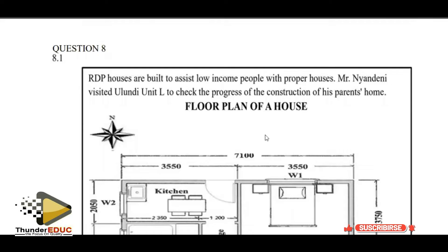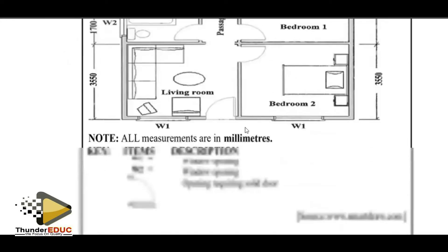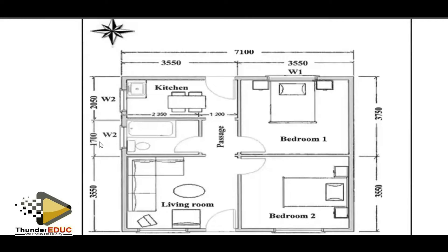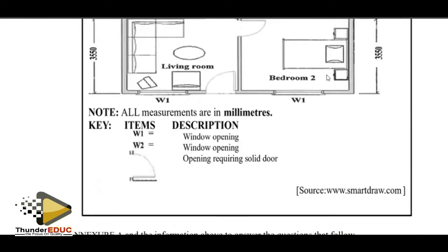RDP houses are built to assist low income earners with proper houses. Mr. Nyandeni visited a unit to check the progress of the construction of his parents' home. This is the floor plan of the house — this is how the house will look. Take note: we have a compass, and these measurements are in millimeters.